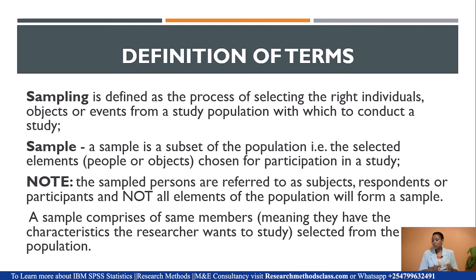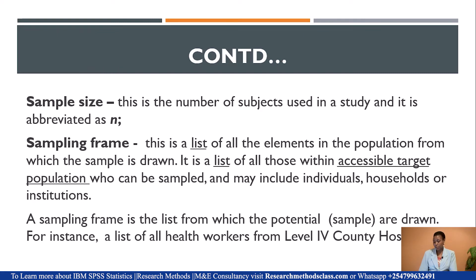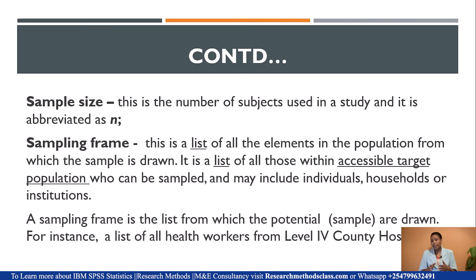The sample will comprise members who have the same characteristics the researcher wishes to study, drawn from the accessible population. Sample size is the number of subjects who will be used in the study, abbreviated as N. Another critical term is sampling frame — a list of all the elements in the population from which the sample is drawn. You cannot sample unless you have the sampling frame where you have listed all the elements. For example, a sampling frame would be a list of all health workers from level 4 county hospitals, because it is from that list where we draw our sample.